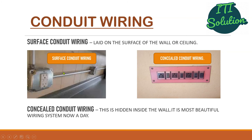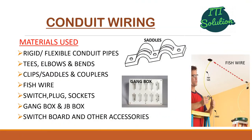You can see this is the surface conduit wiring. In concealed conduit wiring, the conduit is hidden inside the wall, making it the most beautiful wiring system nowadays. Materials used for conduit wiring include rigid and flexible conduit pipe, tees, elbows, bends, clips, saddles, couplers, fish wire, switches, plugs, sockets, gang box, switchboard, and other accessories.